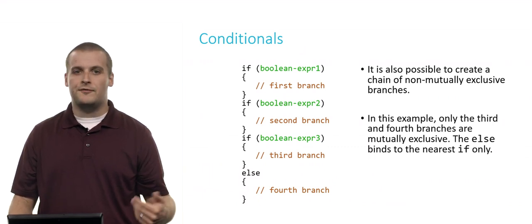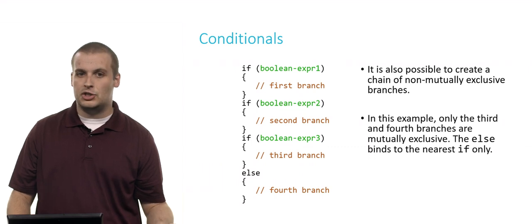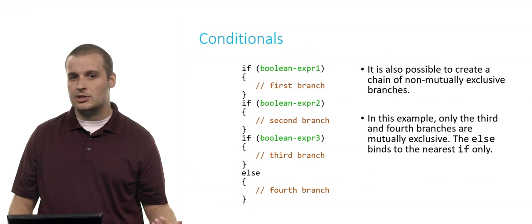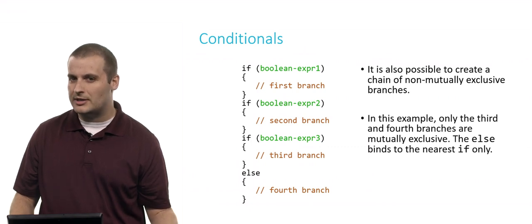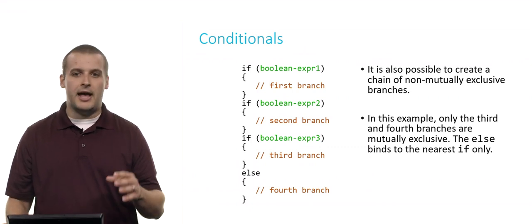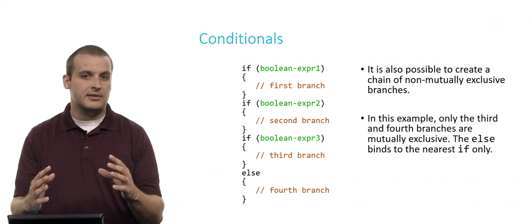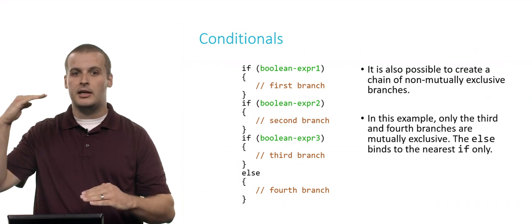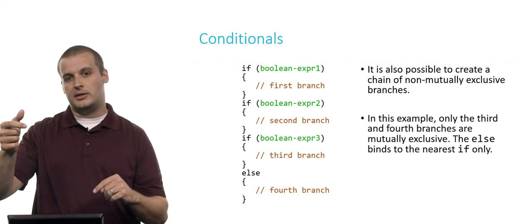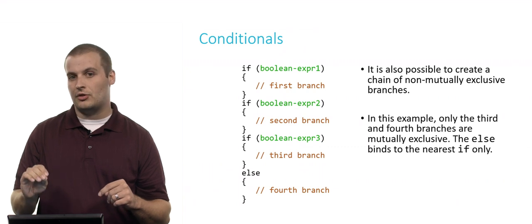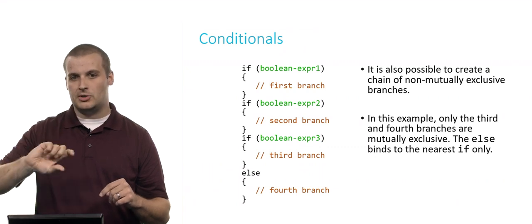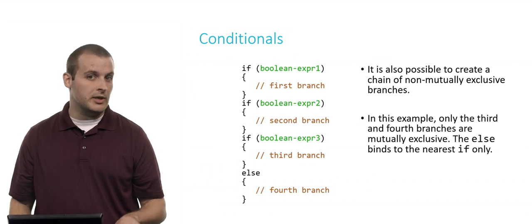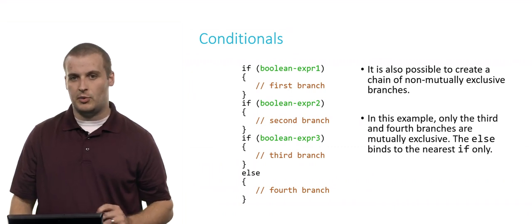Or perhaps you satisfy the first condition and the second condition, but you don't satisfy the third condition. In this case, you go down the first branch and the second branch, and then the fourth branch. The reason for this is that the else will only bind to the nearest if. So even though there's an else here, that doesn't necessarily create a mutually exclusive chain of everything. It's only that expression there with Boolean expression three, that's the mutually exclusive with the else. So it is possible, and sometimes quite useful, to create a chain of not mutually exclusive branches.